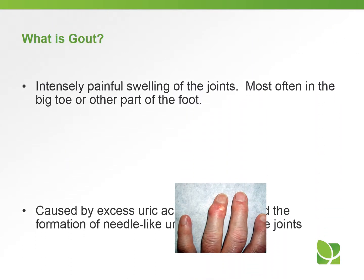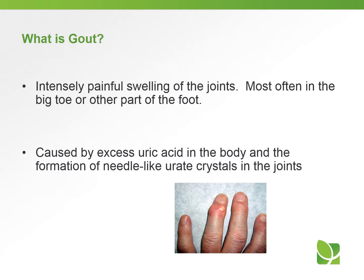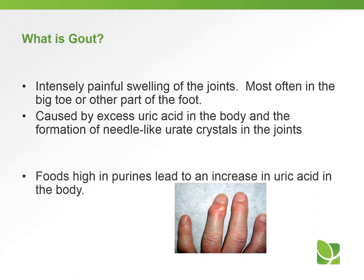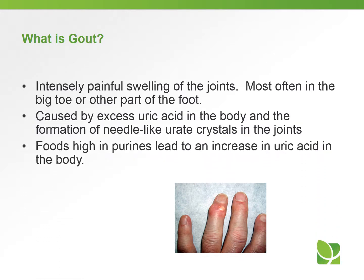So what exactly is gout? It's an intensely painful swelling of the joints — and you can see from the picture how painful that looks. Most often the big toe, fingers, or other part of the foot, caused by excess uric acid in the body and the formation of needle-like urate crystals in the joints. Foods that are high in purines can lead to an increase in uric acid in the body.